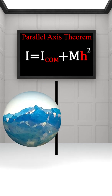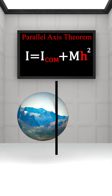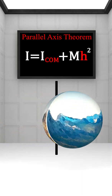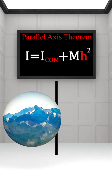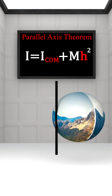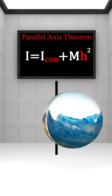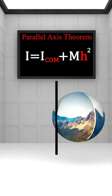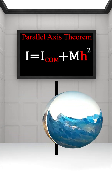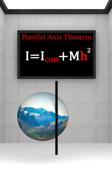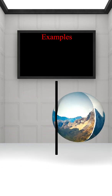To find the moment of inertia about any axis: I equals I₁ plus I₂, where I₁ should equal I_com.